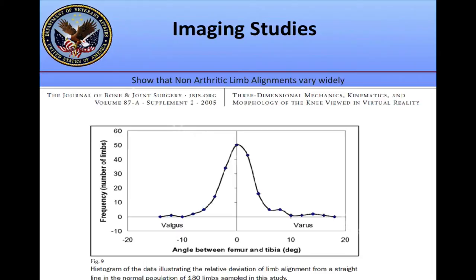Dr. Eckhoff performed CT scans on college students with non-arthritic knees. What can be seen is that there is a broad range of angular alignments for the limb. There is a bell-shaped curve centered at zero, but for normal subjects we can see varus and valgus knees that are over 15 degrees of angulation in terms of limb alignment.